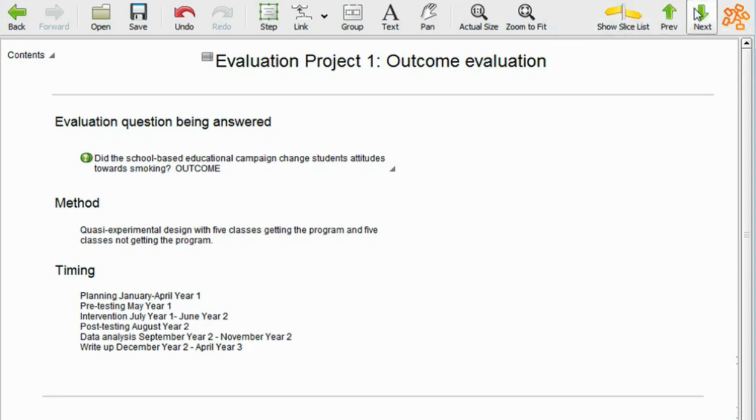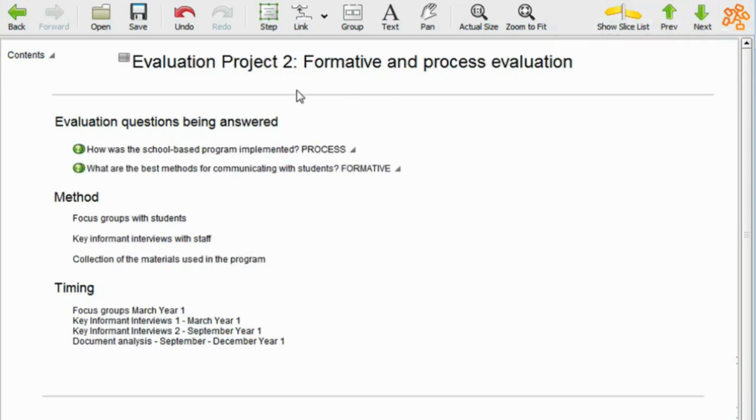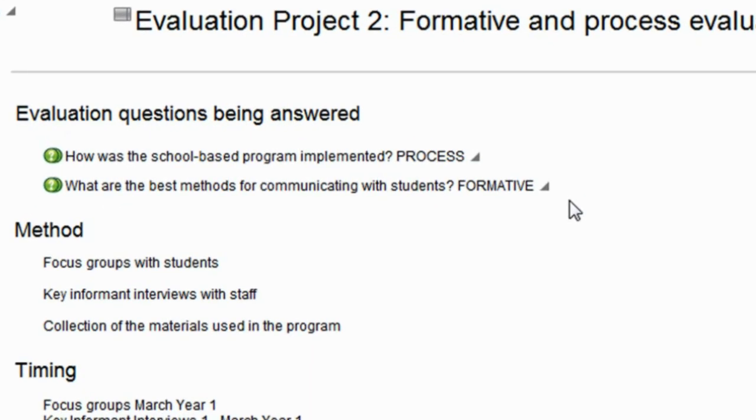So then we can also set out for another evaluation project, evaluation project two, formative and process evaluation, and that sets out the two questions being answered by that evaluation project and the way we would do it, focus groups with students, key informant interviews with staff, etc.